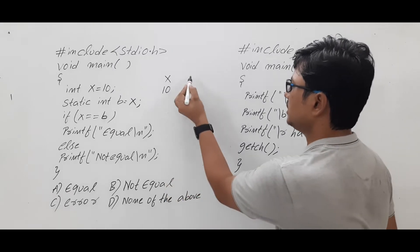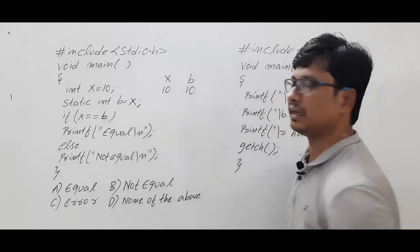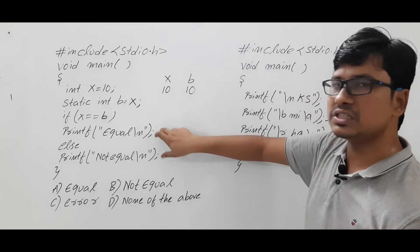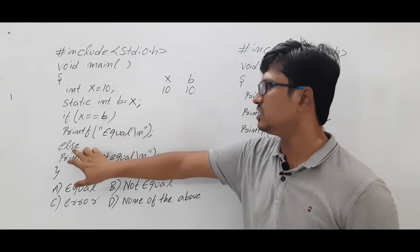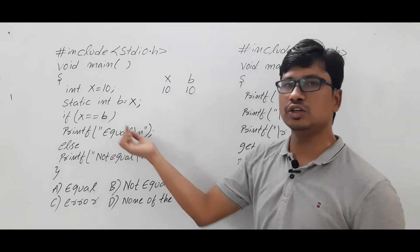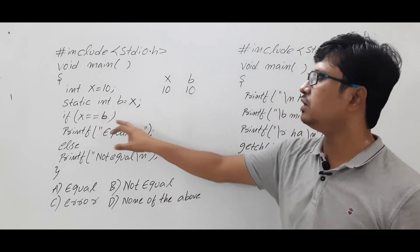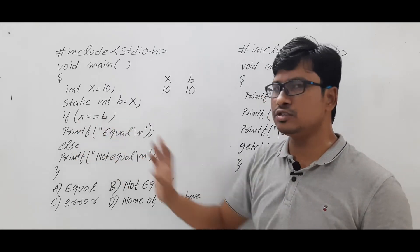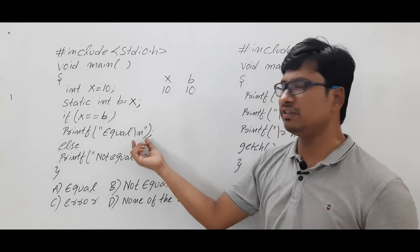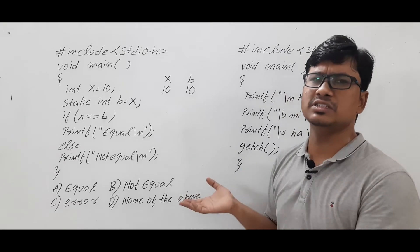Now, 'b = x' — a lot of students will think that b will also get the value which is in variable x, which is 10. Then there is an if condition: if the condition is true, the statements in the if block are executed; otherwise, the else block runs. The condition is 'x == b'. Since x is 10 and b is 10, many students will think 10 equals 10 — the condition is true and the output will be 'equal'.